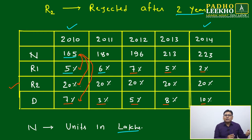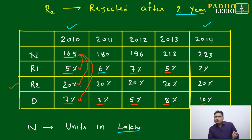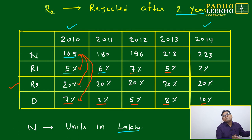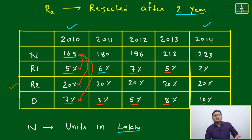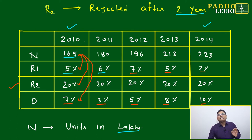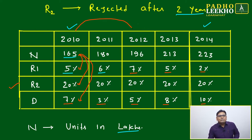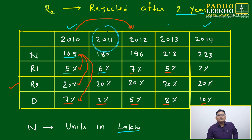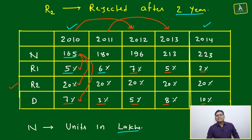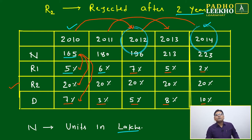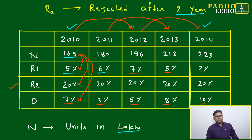As we progress year to year, whatever was produced last year keeps getting added to the available stock. After two years, 20% of what was manufactured will become obsolete. So 2010's final output — 20% becomes obsolete in 2012. 2011's final output — 20% becomes obsolete in 2013. 2012's production — 20% becomes obsolete in 2014. The remaining 80% will be active.